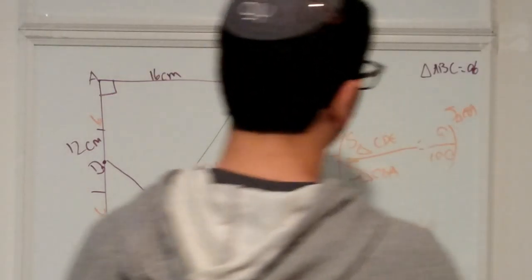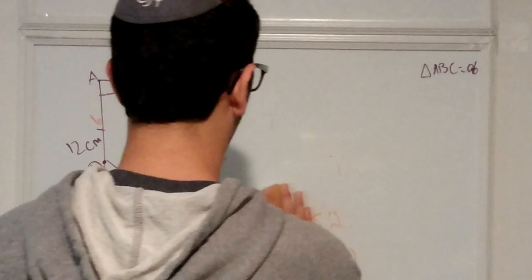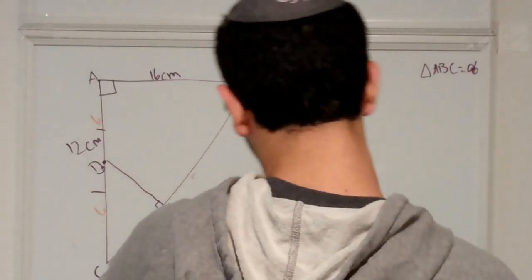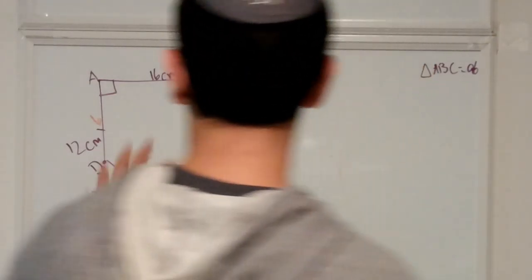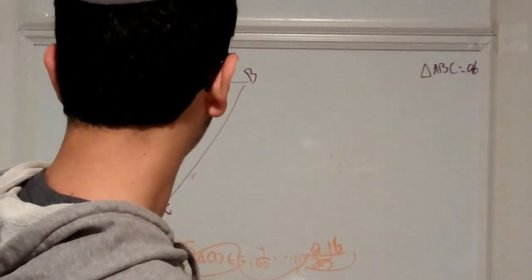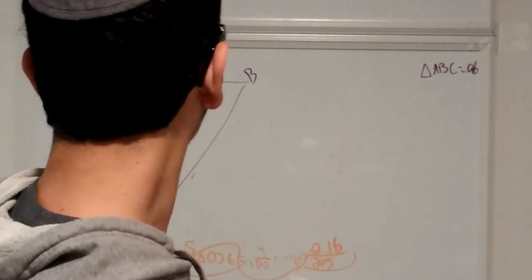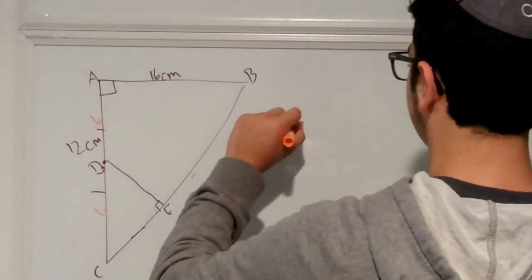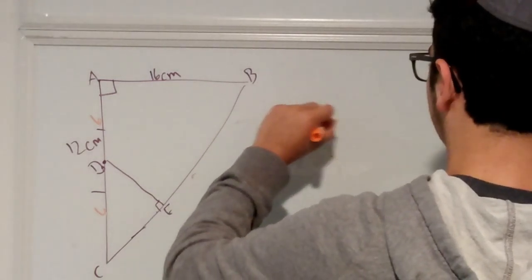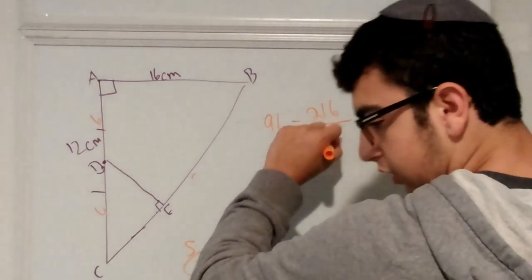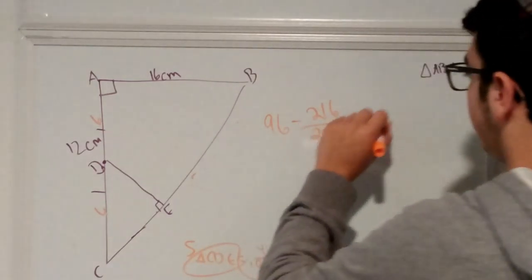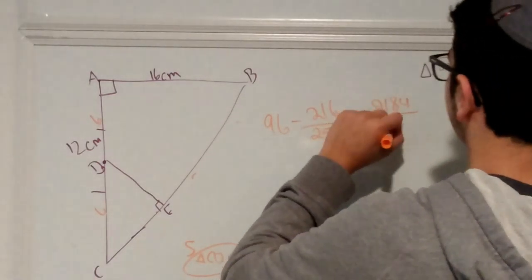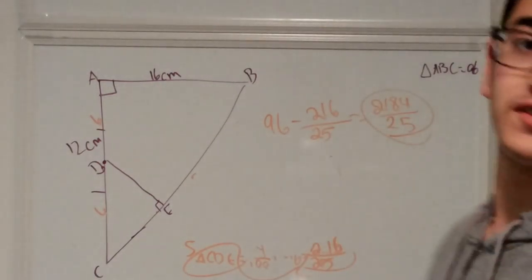And so, this over here can get erased. As I said before, what we're going to do in this problem, I erased that, 216. We're going to take the ABC and subtract CDE from it, leaving us with quadrilateral ABED. So our answer is going to be 96 minus 216 over 25. And that obviously is equal to this gorgeous looking number. It's so simple.